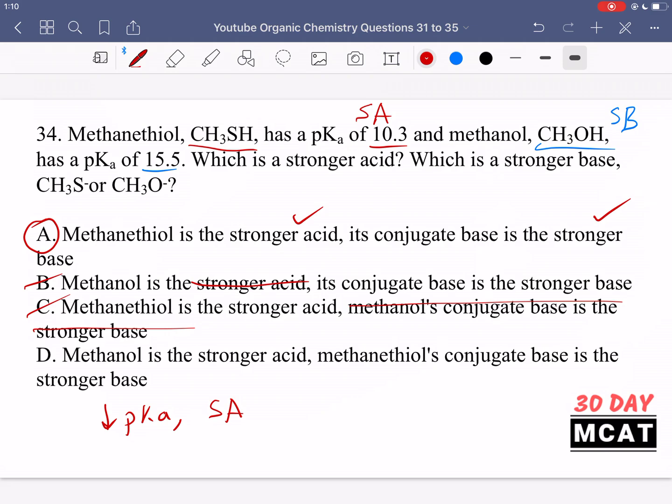That second part is incorrect because if methanol is the stronger base itself, then its conjugate base is going to be a conjugate acid not a conjugate base. D is also incorrect because it says methanol is a stronger acid.